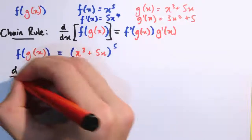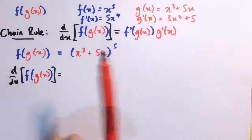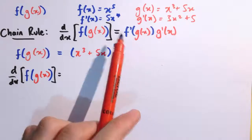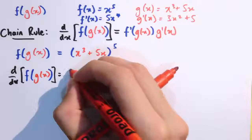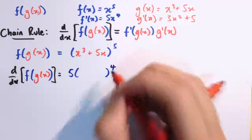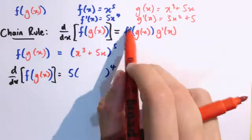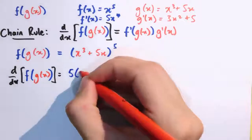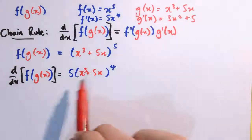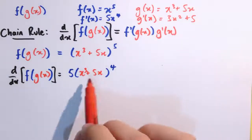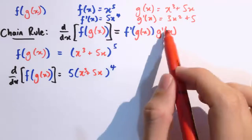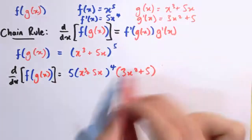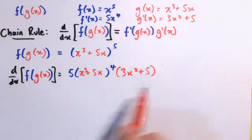Applying the chain rule to get d by dx of this composition, the chain rule says to do f dash applied to g of x. F dashed is 5x to the 4, so we have 5 times, but instead of x we put in g of x, which is x cubed plus 5x. Then we multiply by g dash of x, which is 3x squared plus 5, making sure to put that in brackets because it's the whole thing multiplied by this whole thing.